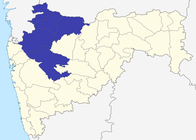The city of Nashik is the largest city of this division. Districts with 2011 population include Ahmednagar, Dhul, Jalgaon, Nandurbar, and Nashik with a population of 6,109,052. The largest city is Nashik.